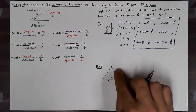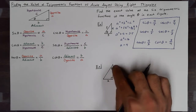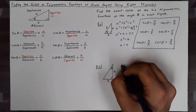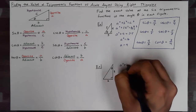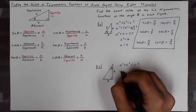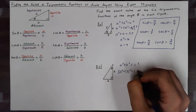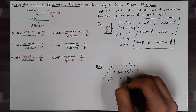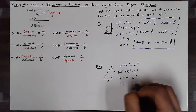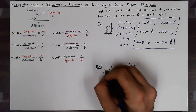Over here, I'm given both the opposite and the adjacent side, so I need to solve for the hypotenuse to find the value of all the trig functions. I'll use the Pythagorean theorem again. This time I don't know the hypotenuse, so I'll have two squared plus three squared equal to c squared, giving me four plus nine equals c squared, and c will equal the square root of 13.